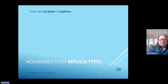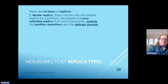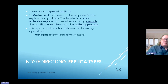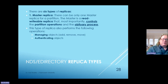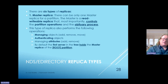There are six basic types of replicas. First, the master replica—like the Highlander, there can be only one. It is a read-writable replica that controls the partition operations and the obituary process. It manages objects including add, remove, and move; authenticates objects, which is important for security; and manages and can add or remove attributes. By default, it is the first server in the tree that holds the master replica of the root partition.